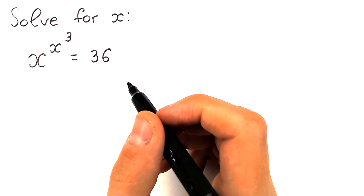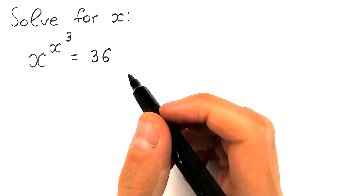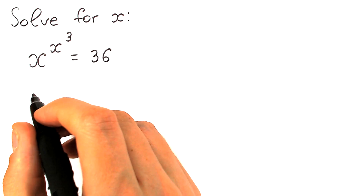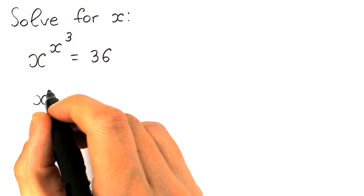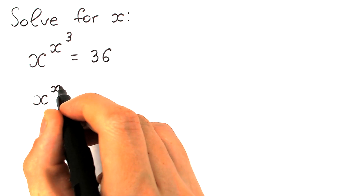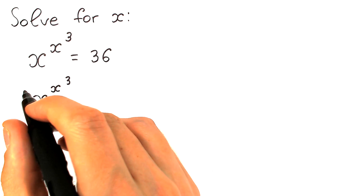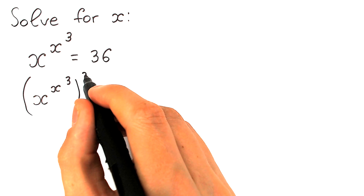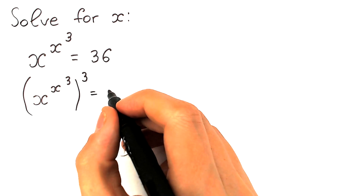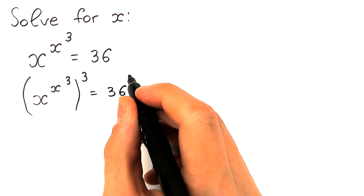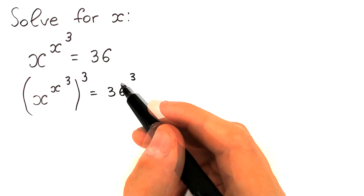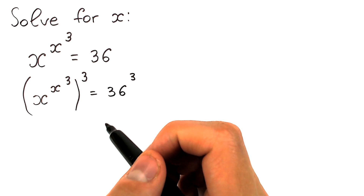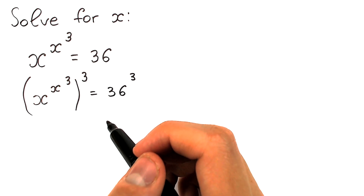For solving this question we need to know a really interesting trick. Take a look closely — let's raise both sides to the power 3. So we have x to the power x to the power 3, and we raise both sides: the left hand side we raise to the power 3, and this is equal to 36 to the power 3. Raising both sides to the power 3 is really important for this first step.